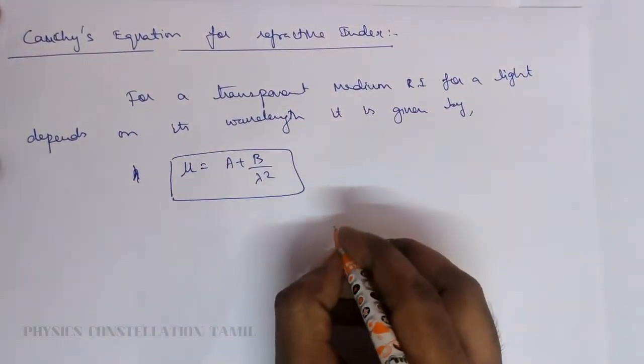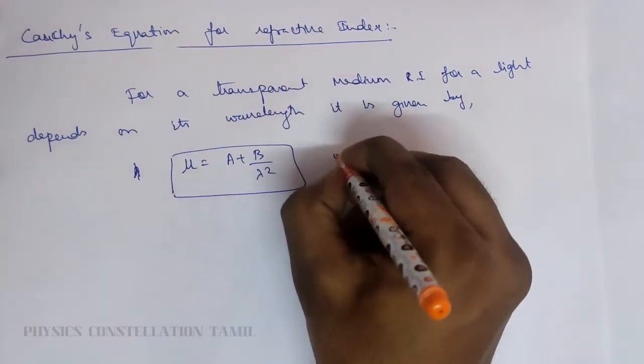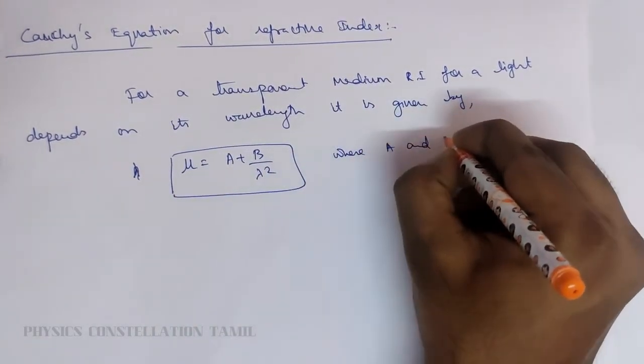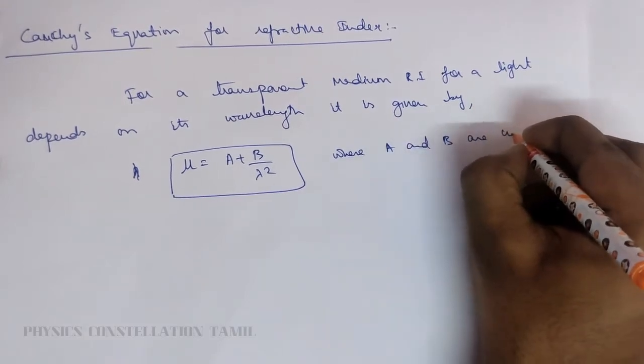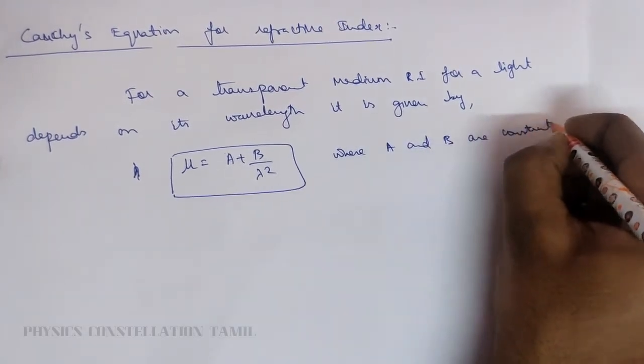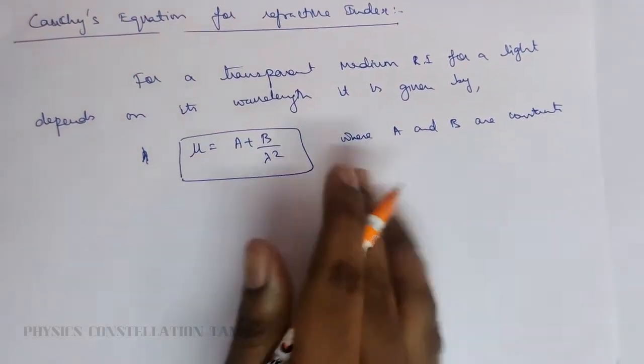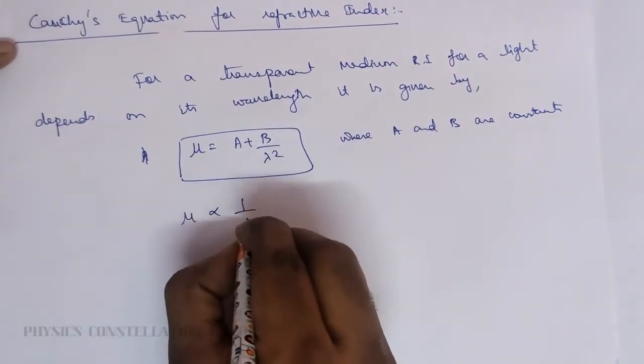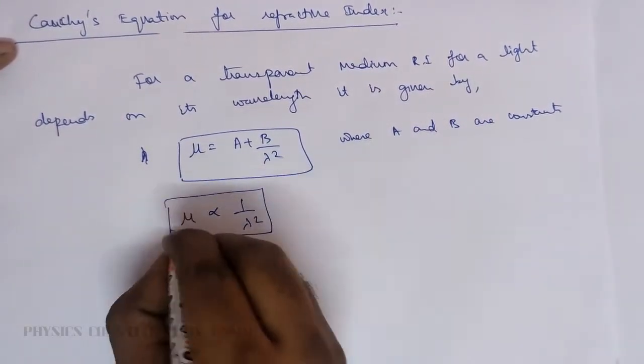So this is Cauchy's equation. Where A and B are constants, and if you see this refractive index is inversely proportional to the square of the wavelength.